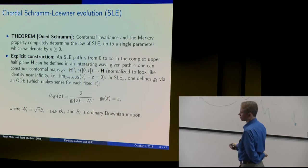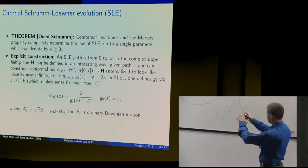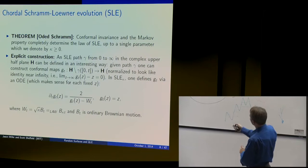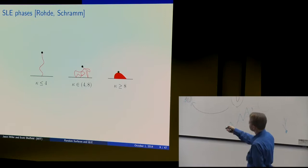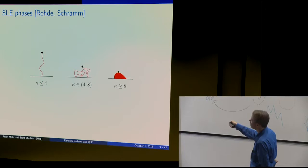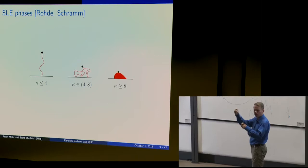They gave SLE an explicit construction based on Loewner evolution — a differential equation introduced about 100 years ago. If you plug in a Brownian motion, it gives a way of describing this fractal. These are the SLE phases: if κ ≤ 4, the curve is a simple curve; if κ is between 4 and 8, the curve is not space-filling but it hits itself; and if κ ≥ 8, it's a space-filling curve.